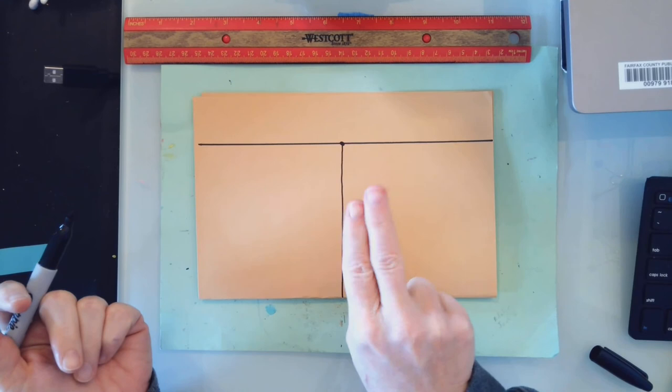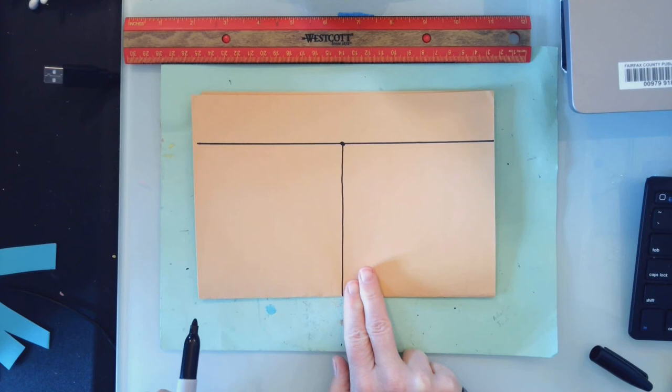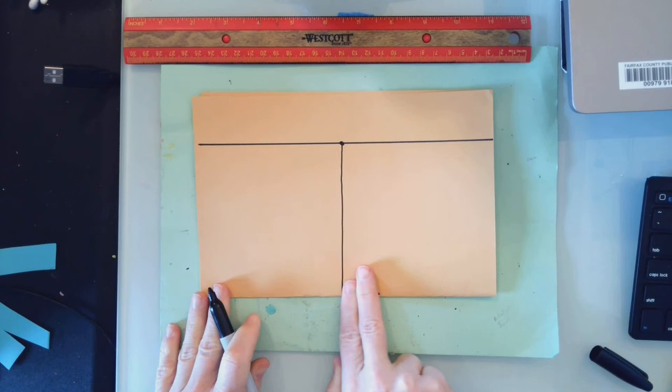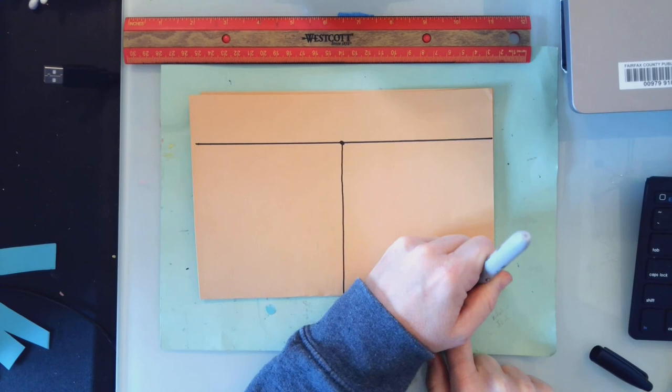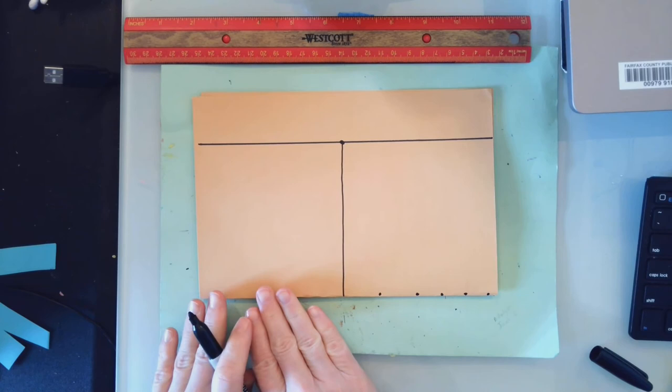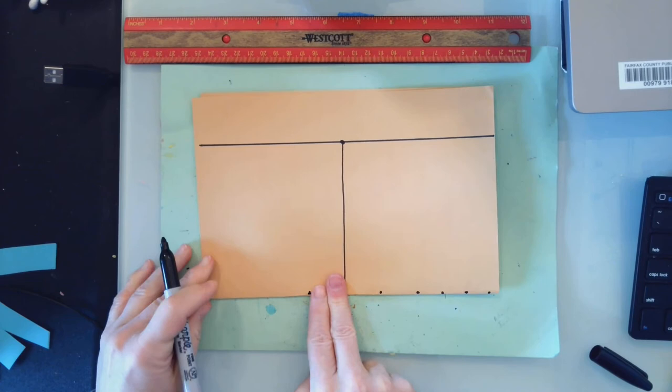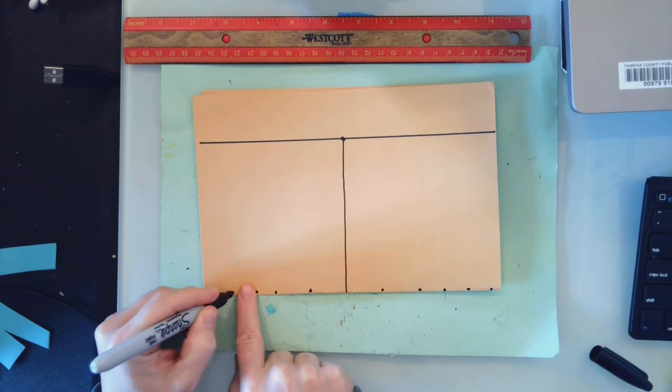Next you're going to use your fingers to measure. You're going to take two fingers and line them up with that midpoint line to one side and put a little dot. Slide your fingers over and put another dot. Now take one finger away and measure over one finger, one finger, one finger. Do the same thing on the opposite side of that midpoint line: two fingers, two fingers, one finger, one finger, one finger.